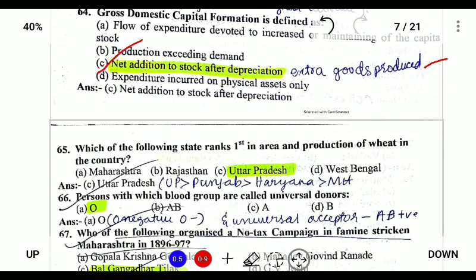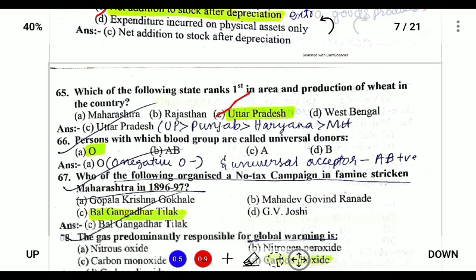Which of the following ranks first in production of wheat in the country? Wheat maximum production is in Uttar Pradesh, followed by Punjab. People with blood group O are called universal donors.